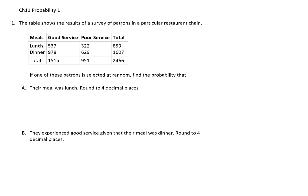Here we have a two-way table, or a contingency table, with some data in it. This data is about good service and poor service during lunch and dinner. Our first question is: if we're selecting one patron at random, what is the probability that their meal was lunch?